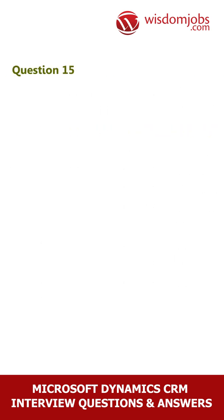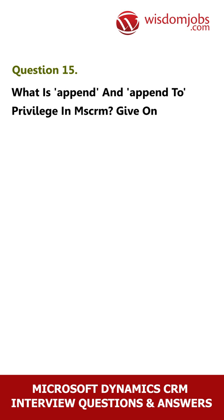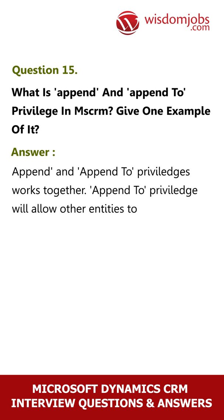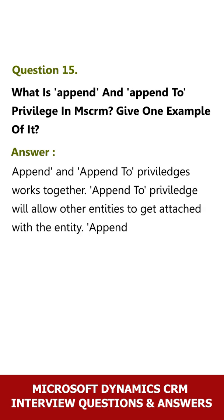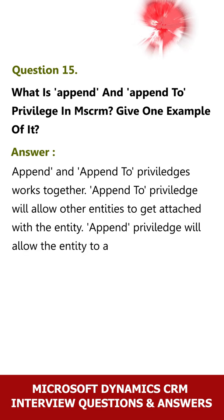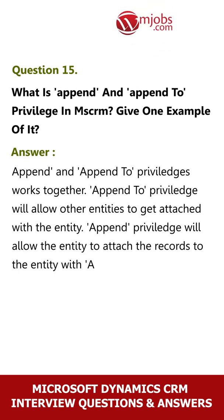Question 15: What is Append and Append To privilege in MSCRM? Give one example. Answer: Append and Append To privileges work together. The Append To privilege allows other entities to get attached to the entity. The Append privilege allows the entity to attach its records to the entity that has the Append To privilege.